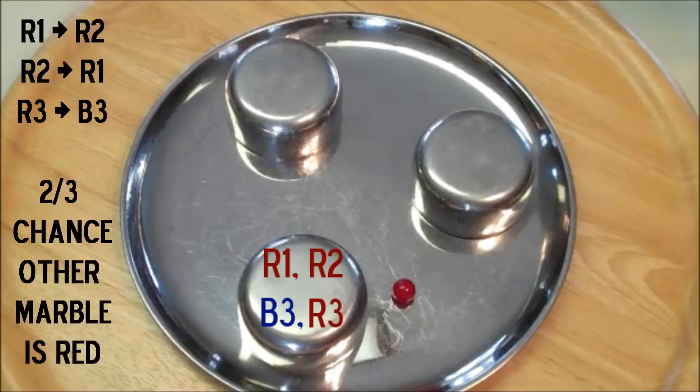We can either pick red one, and the other marble will be red two. We can pick red two, and the other marble will be red one. Or we could pick red three, and the other marble will be blue three. So there's actually a two-thirds chance that the other marble is red, and that's why the answer is two-thirds.